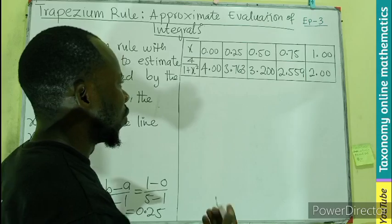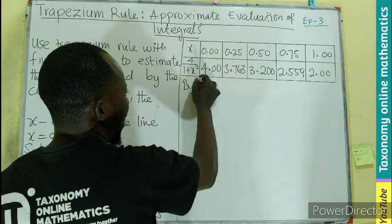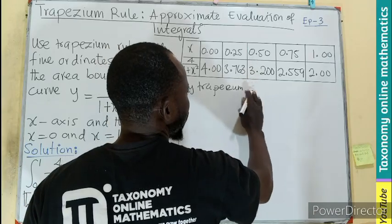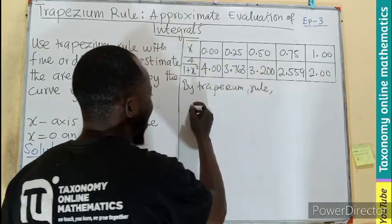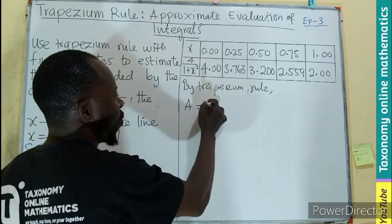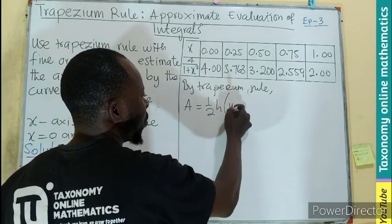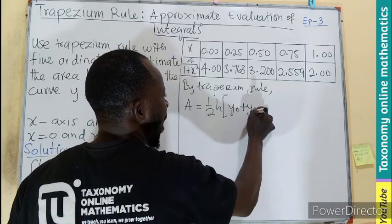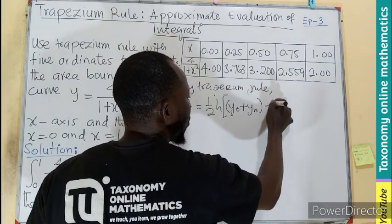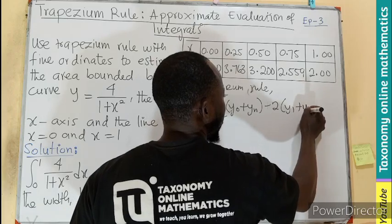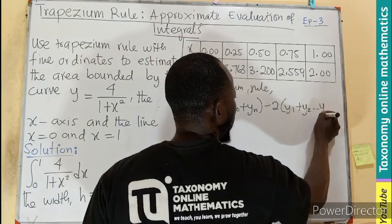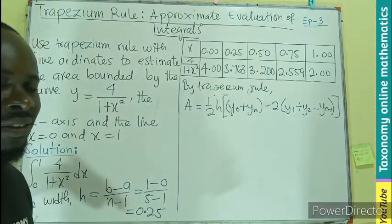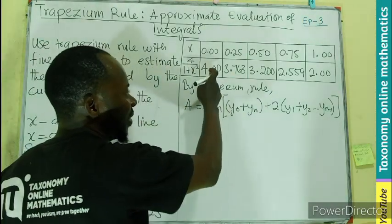So by the trapezoidal rule, we have: Area = (h/2) × [y₀ + yₙ + 2(y₁ + y₂ + ... + yₙ₋₁)]. Remember we derived this in the first episode.